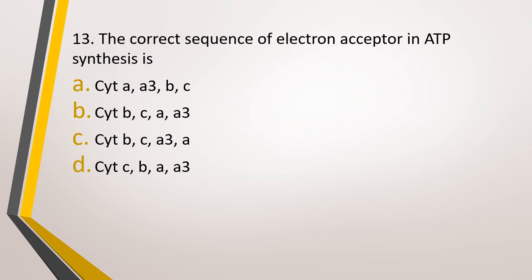Question number 13. The correct sequence of electron acceptors in ATP synthesis is? Option A: Cytochrome A, A3, B, C. Option B: Cytochrome B, C, A, then A3. Option C: Cytochrome B, C, A3, A. Option D: Cytochrome C, B, A, A3. The correct answer is Option B — Cytochrome B, followed by Cytochrome C, then Cytochrome A, which then goes to Cytochrome A3.